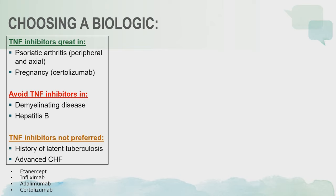IL-17 inhibitors as a class have very robust skin efficacy as well as joint efficacy. When you look at our IL-17 inhibitors, both secukinumab and ixekizumab are monthly dosing, and then brodalumab is every two-week dosing.